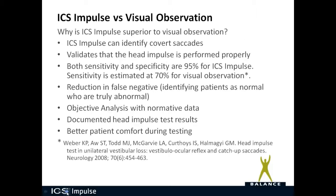Let's talk about ICS Impulse versus visual observation. ICS Impulse can identify covert catch-up saccades, and it validates that the head impulse is performed properly. Both sensitivity and specificity are 95% for ICS Impulse, while sensitivity is estimated at only 70% for visual observation. This reduces false negatives — you don't want to miss covert catch-up saccades and identify abnormal patients as normal. With ICS Impulse, you identify both overt and covert catch-up saccades and don't misidentify anybody.